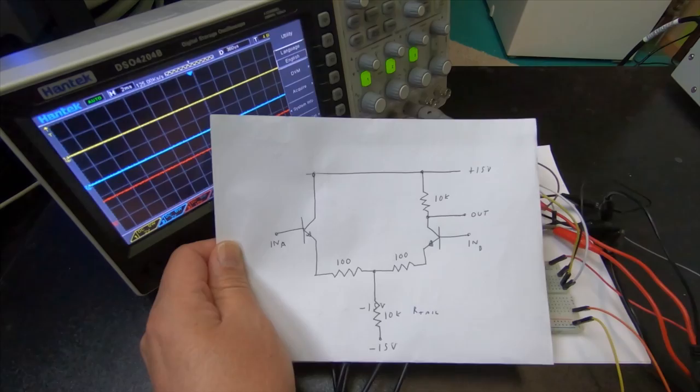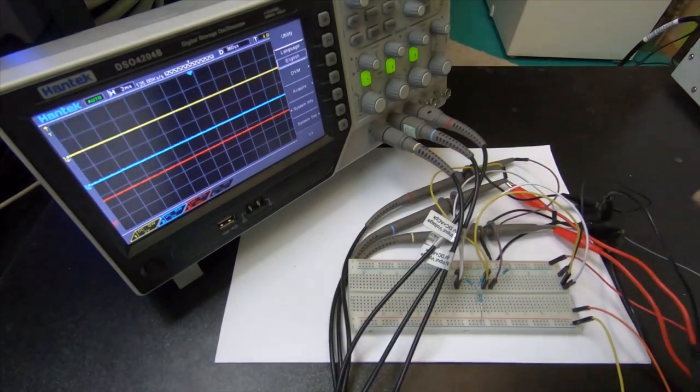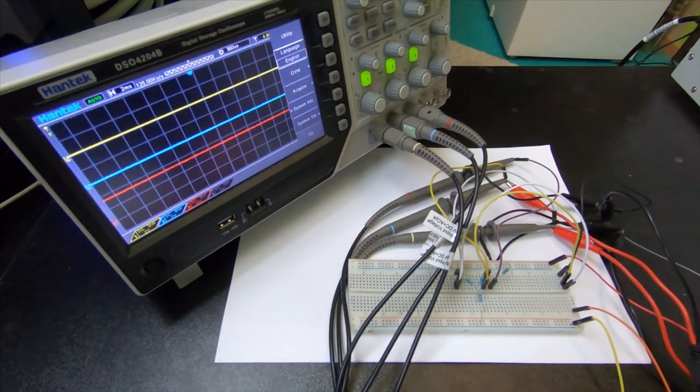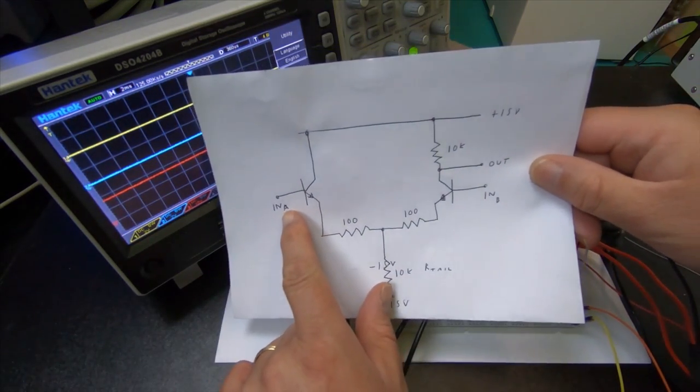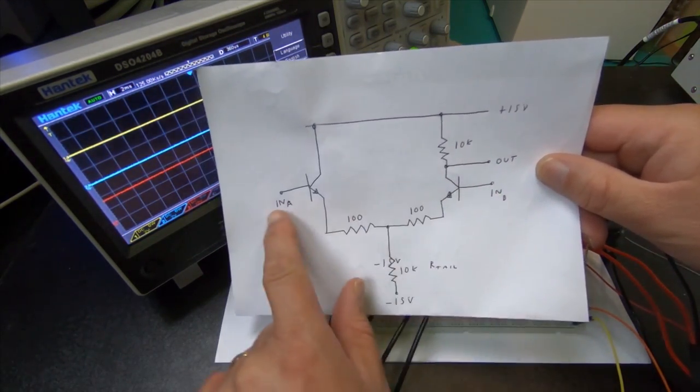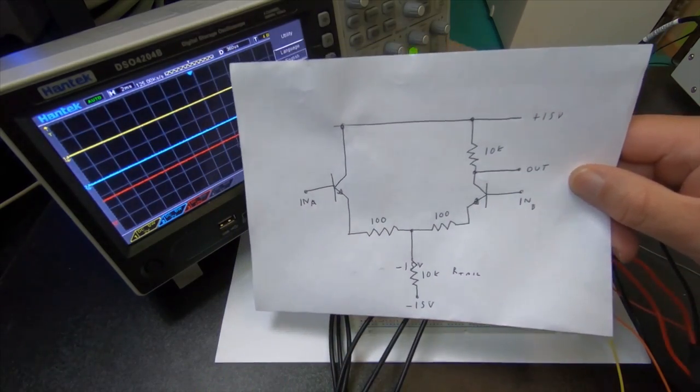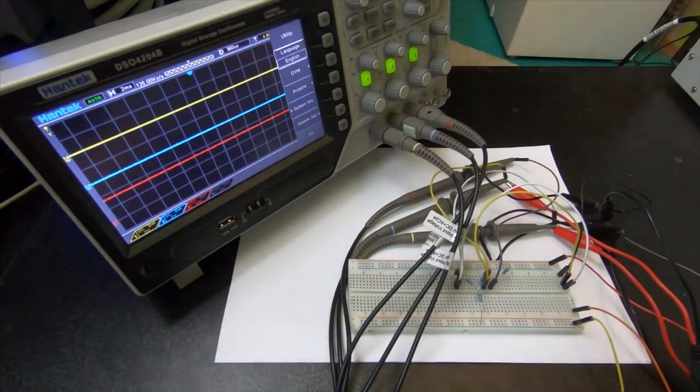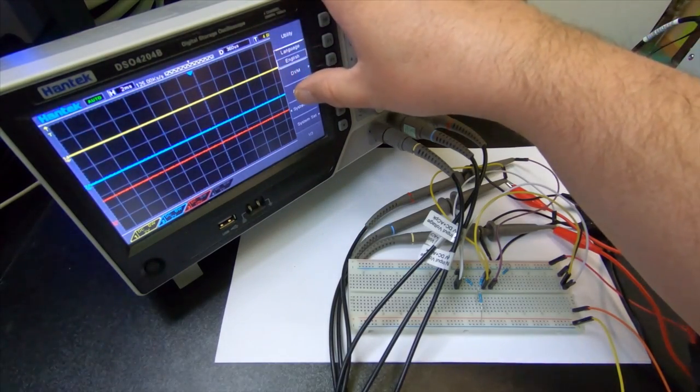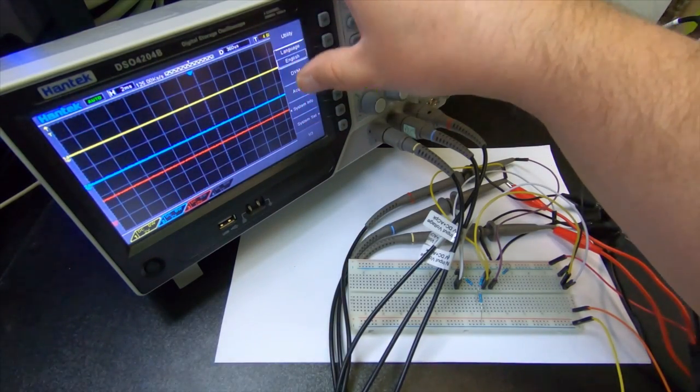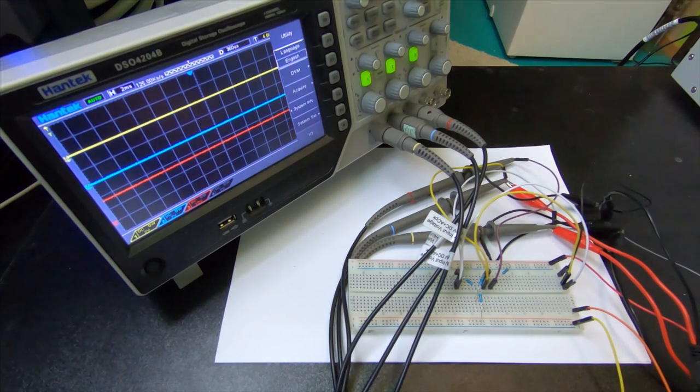Anyway, so what I've set up here is the rest condition. So the inputs which are now designated as A and B, they are at ground potential and this is the rest state of the output. So the inputs are yellow and blue and then the output is red.